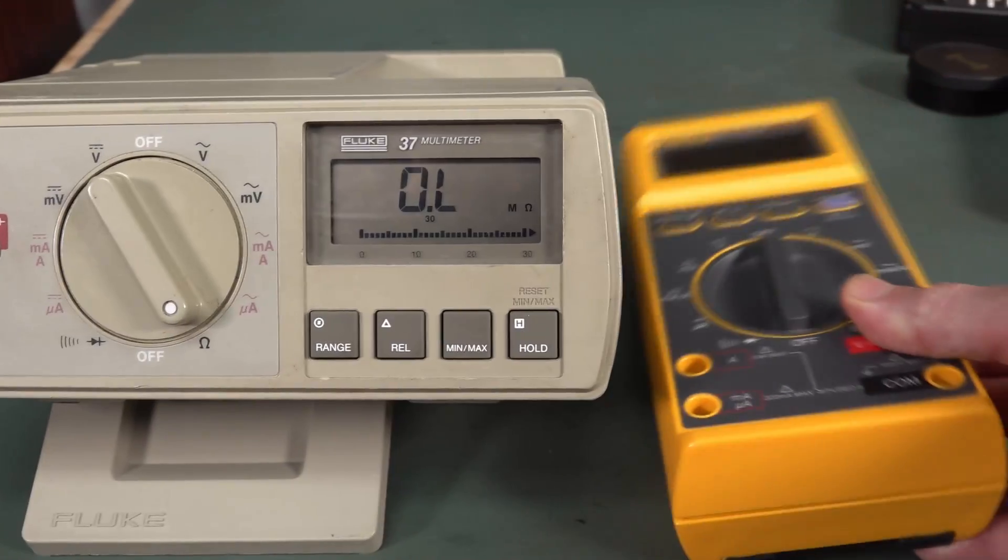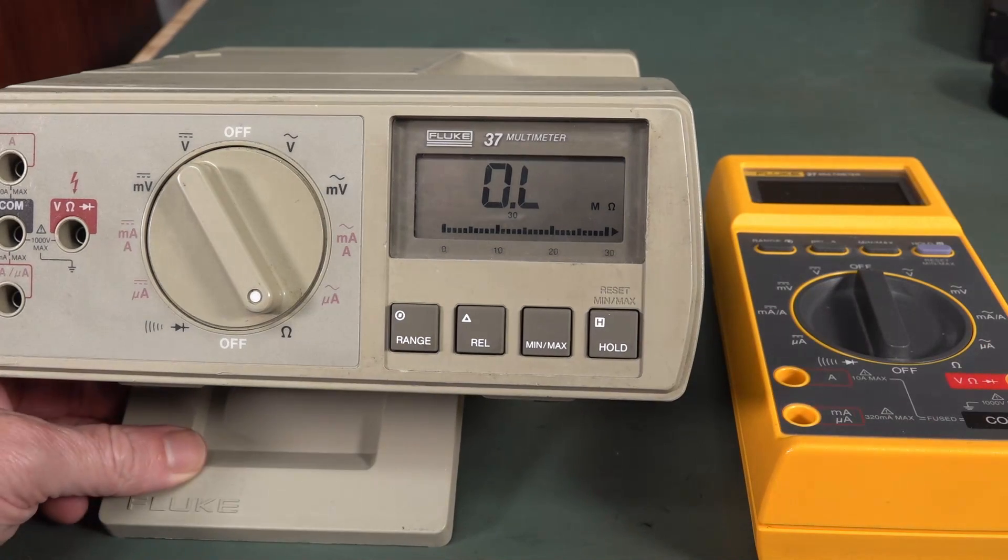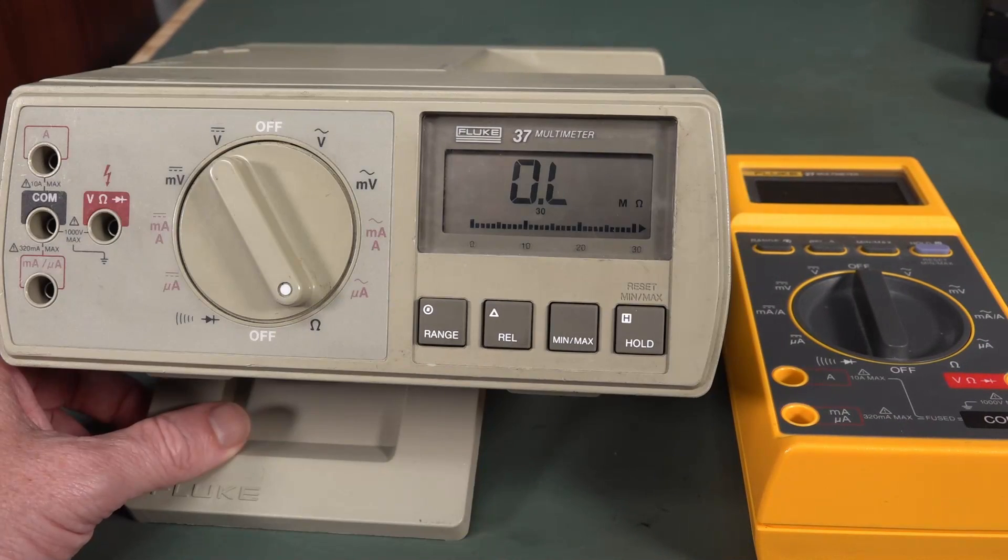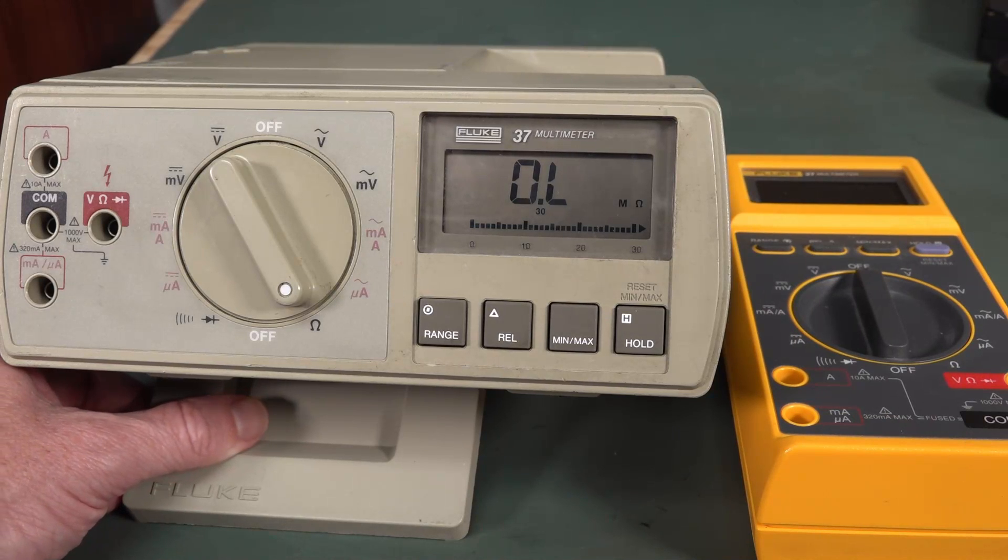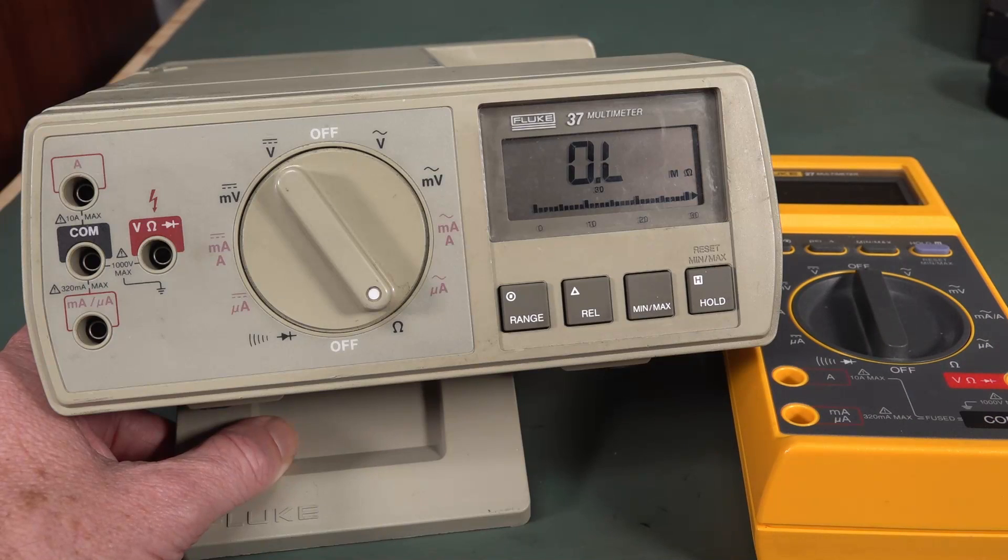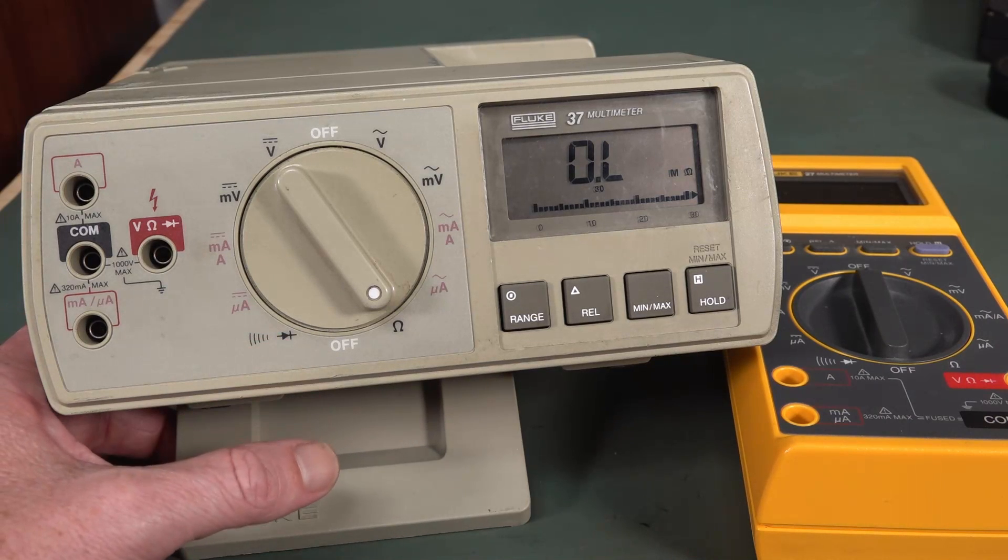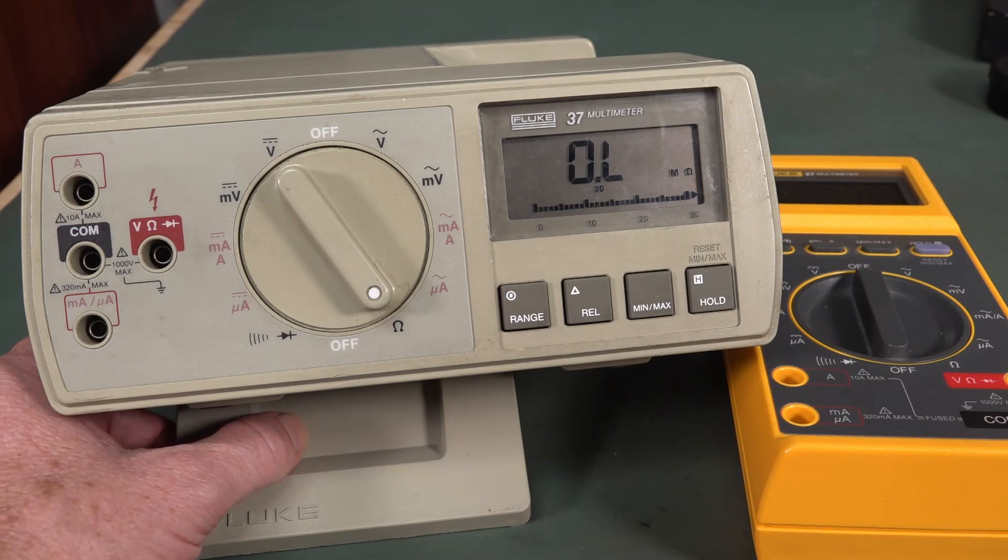And of course I've done a video on the Fluke 27. And hell, practically identical functionality and specs. So if you can pick either of these up in good condition, they'll still serve you well for quite some time to come. So it'd be nice to have a bit more modern functionality, like super fast continuity and capacitance and some stuff like that. But I don't know. I think it's a winner.